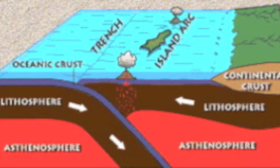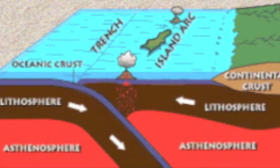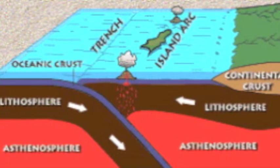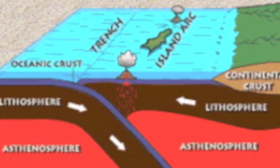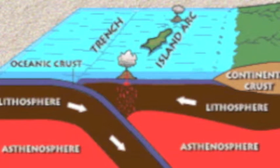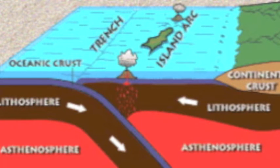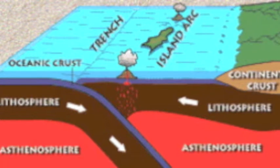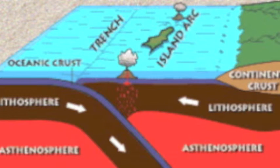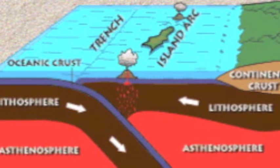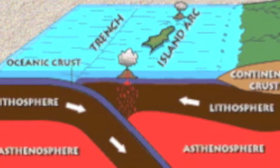Oceanic plates are subducted due to density differences. This is the location of many shallow and deep focused quakes, extending to depths beneath the overriding plate up to 300 miles deep. A deep trench commonly occurs when a subducting plate plunges beneath the overriding plate, collecting many sediments which are also subducted. Remelting generates magma which forces its way to the surface.